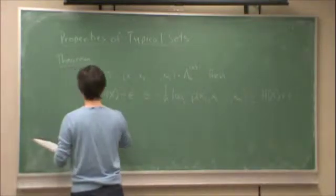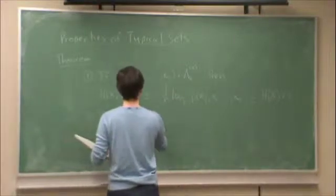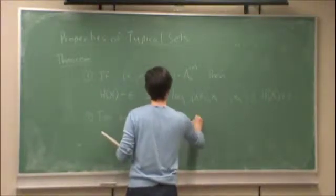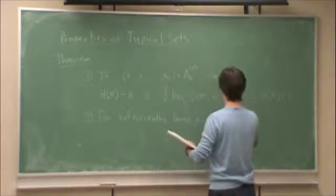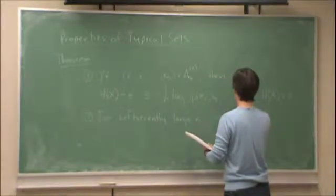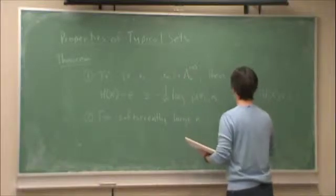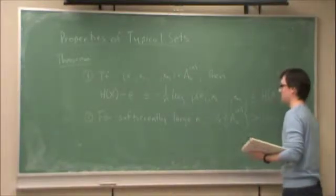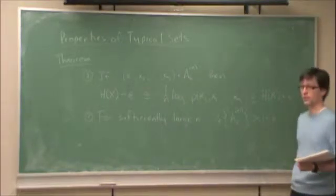Secondly, for sufficiently large n, the probability of the set of sequences that make up the typical set is greater than one minus epsilon. In other words, the probability of occurrence of a sequence inside the Typical Set is greater than one minus epsilon.